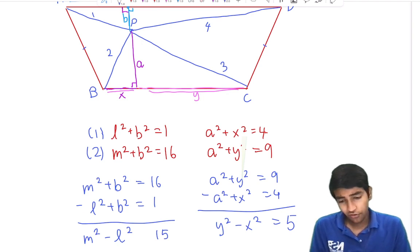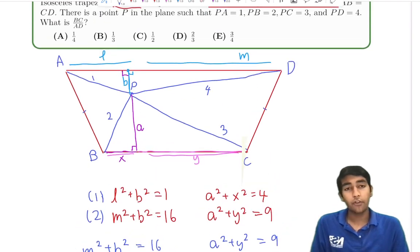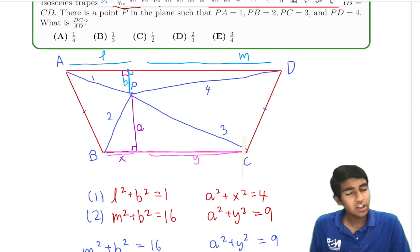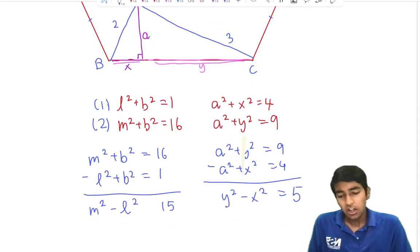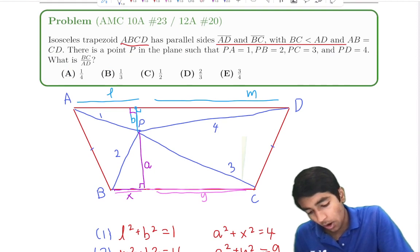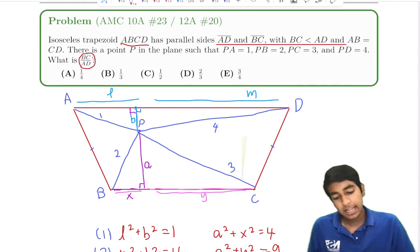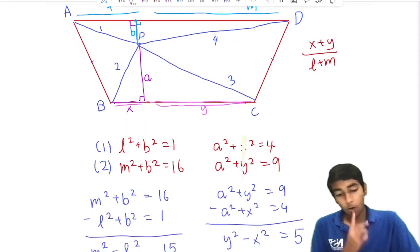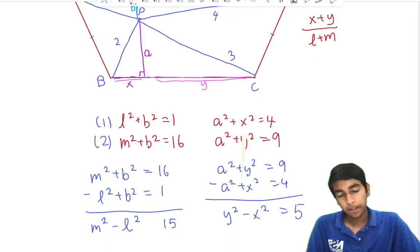We're not going to be able to solve for every variable. There's way too many variables. We've literally got six variables in this diagram. There's no way we can solve for every one with just four equations. So let's keep our eye on the ball, what we're actually trying to find: BC over AD. BC is X plus Y, AD is L plus M. X plus Y over L plus M.